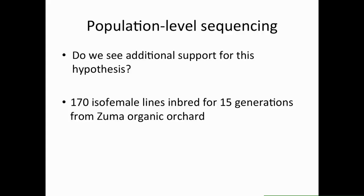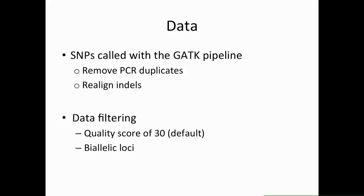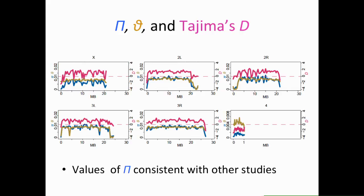We collected 170 isofemale lines of Drosophila simulans and inbred them for 15 generations. They were collected from the Zuma organic orchard in Southern California, where there are no seasonal population crashes — the weather and population are stable. We called SNPs with the GATK pipeline using standard data filtering, including removing any individuals with any probability of identity by descent genome-wide, looking at only bi-allelic loci, and filtering for quality.